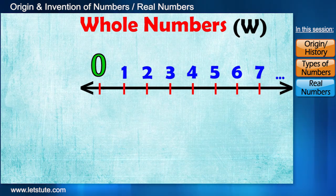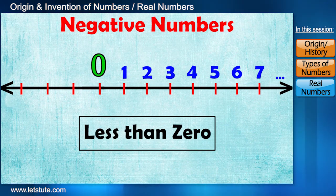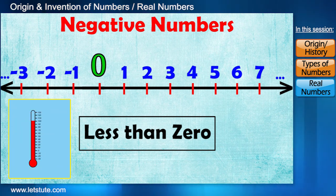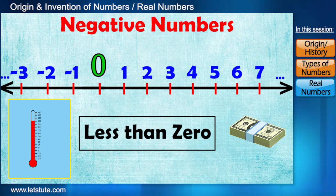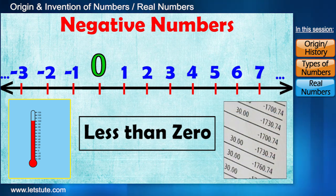Now apart from these, we also have negative numbers which are less than zero, like minus one, minus two, minus three, and so on. They are used to show temperature below zero degrees, or when you spend more money than you have in your bank account, it shows up as a negative number, which also means that your account is overdrawn.